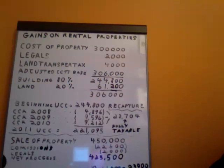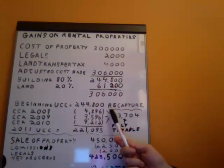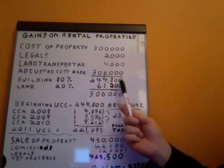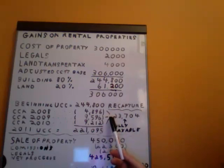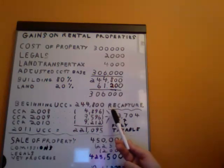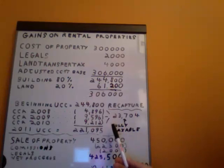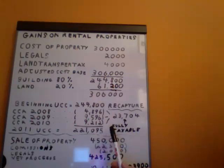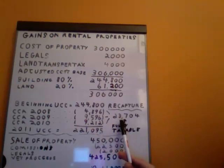For three years, John earned quite a bit of rental revenue, had minimal expenses, and had plenty of rental income, so he decided to take CCA each of those three years. The CCA he was able to deduct in 2008 would be $4,896, which is essentially 2% of $244,800. In 2009, it would increase to $9,596, which is $244,800 less $4,896 times 4%. Then in 2010, another deduction of $9,212. All three amounts taken for CCA add up to $23,704 — that is what is going to be called recapture.